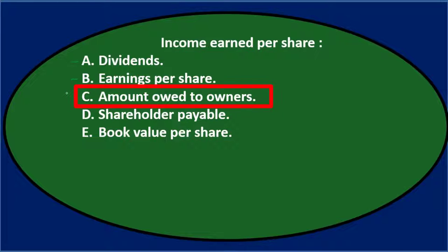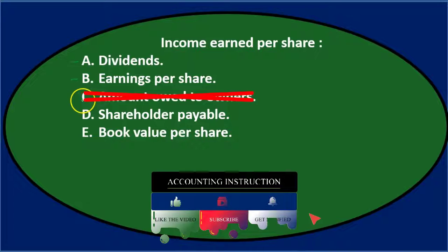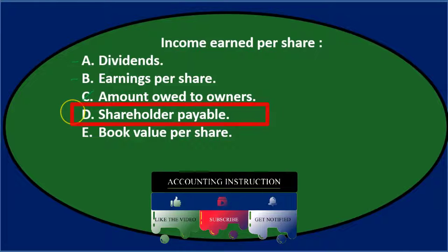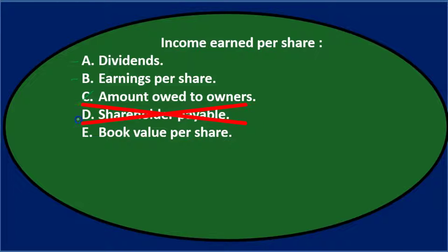C says amount owed to the owners — income earned per share, the whole income is owed to the owners in a way, but it doesn't sound quite right. D says shareholder payable, which is similar to C, but that sounds like a liability. If it's owed to the owner, we'd typically think that would be some kind of equity. That sounds like a made-up thing, so I'm going to cross that out.